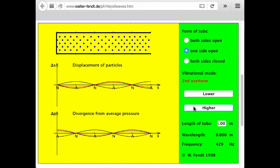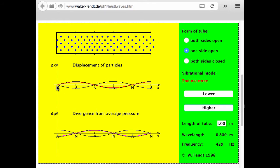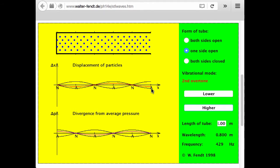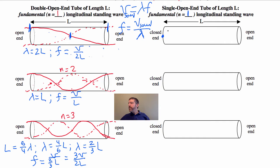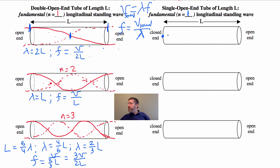Let's go to the next highest harmonic that resonates in this tube. I still have a node at the closed end and a displacement anti-node at the open end, and I have two more displacement anti-nodes in there. You want to draw it so that there's a node here and it keeps going upward and finally hits the anti-node just past the open end.